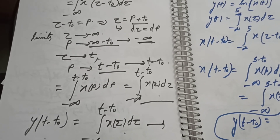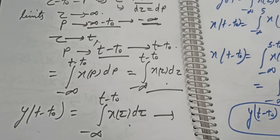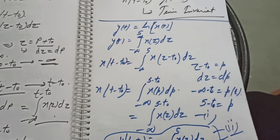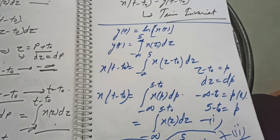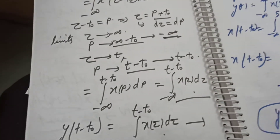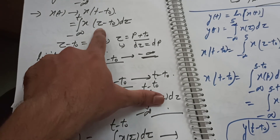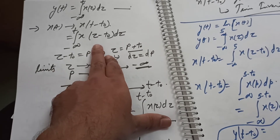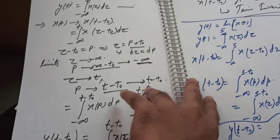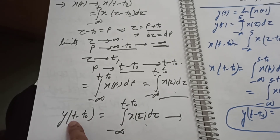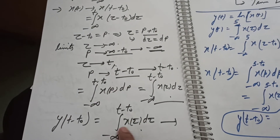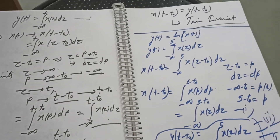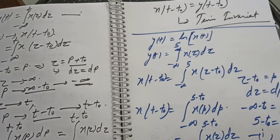Now for y(t minus t-naught): this becomes the integral from minus infinity to (t minus t-naught) of x(τ) dτ, which equals x(t minus t-naught). The shifted input and the shifted output are both the integral from minus infinity to (t minus t-naught) of x(τ) dτ — they are equal. Therefore, this system is time-invariant.